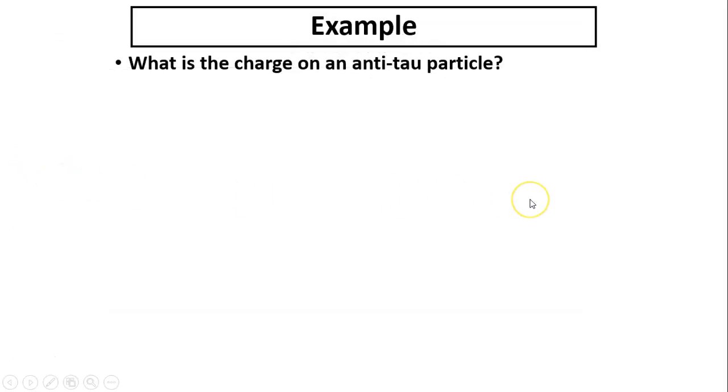Now let's take a look at this example. What is the charge on an anti-tau particle? Look at your reference table, see what's the charge for tau. Tau has negative one e, anti-tau has positive one e. That e means elementary charge.